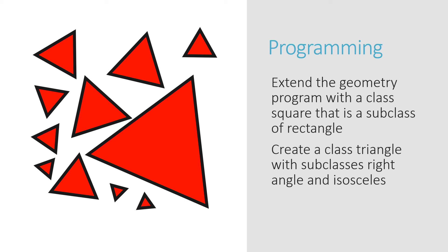Let's do a little bit of programming — extend the geometry programme. You've already created a programme with classes called triangle and rectangle. Create a subclass called square that inherits all the attributes of the rectangle, but has the feature that the width and breadth of the square will always be the same value. And create subclasses of triangle such as right angle triangle and isosceles triangle.